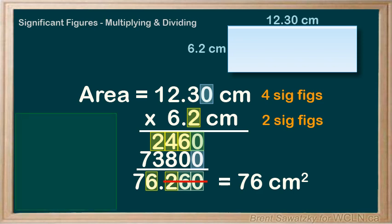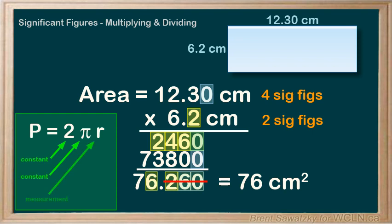For instance, if you were calculating the perimeter of a circle P equals 2 pi r, neither the 2 nor the pi would impact the number of sig figs in our result. They're constants, they're not measurements. The radius is the only true measurement. So only the number of sig figs in our r would impact the number of sig figs in our result.